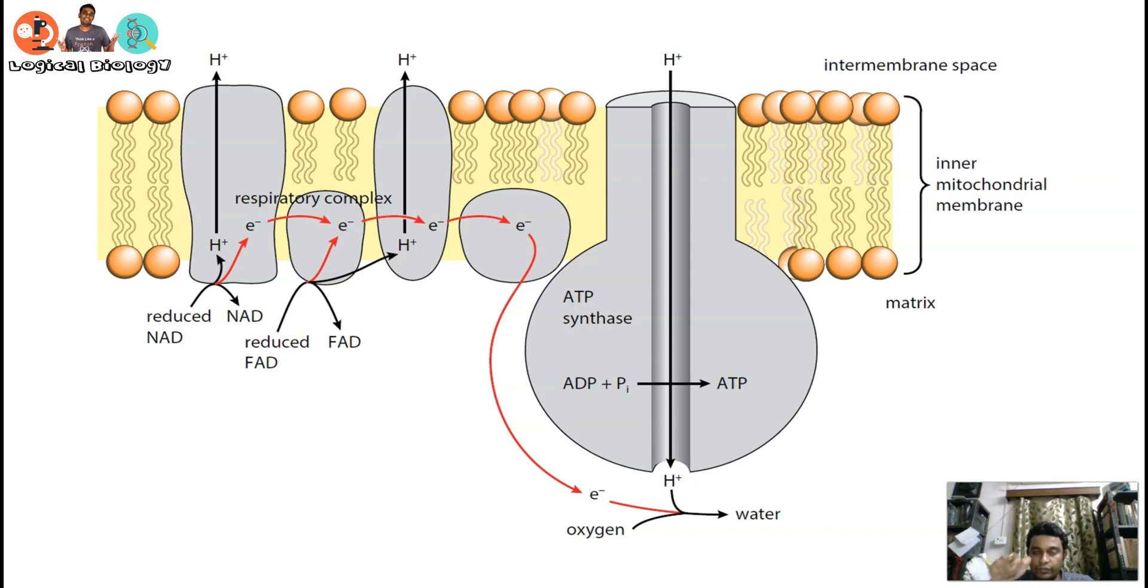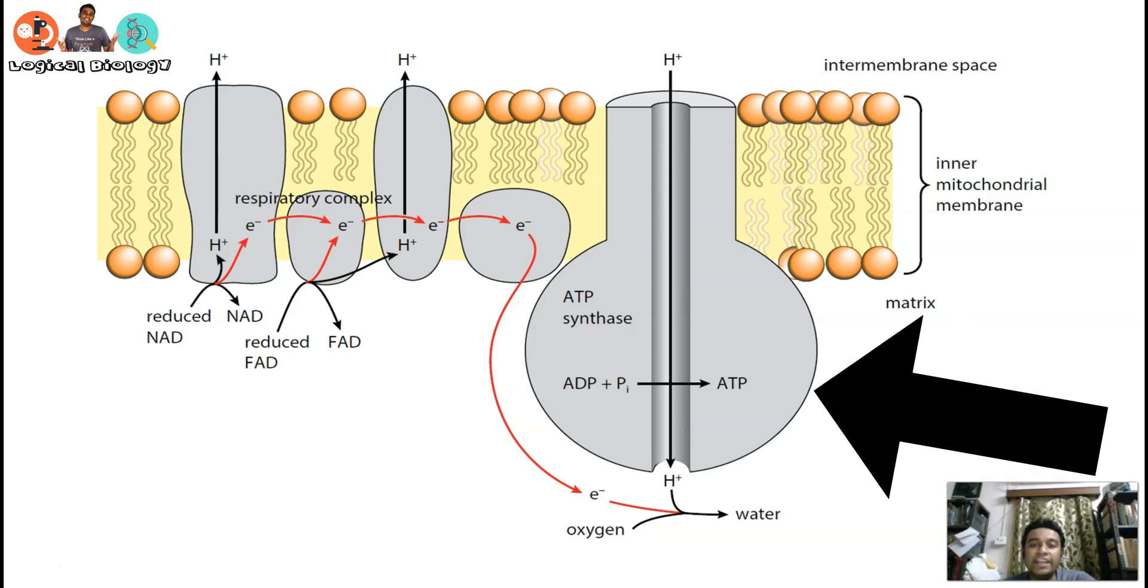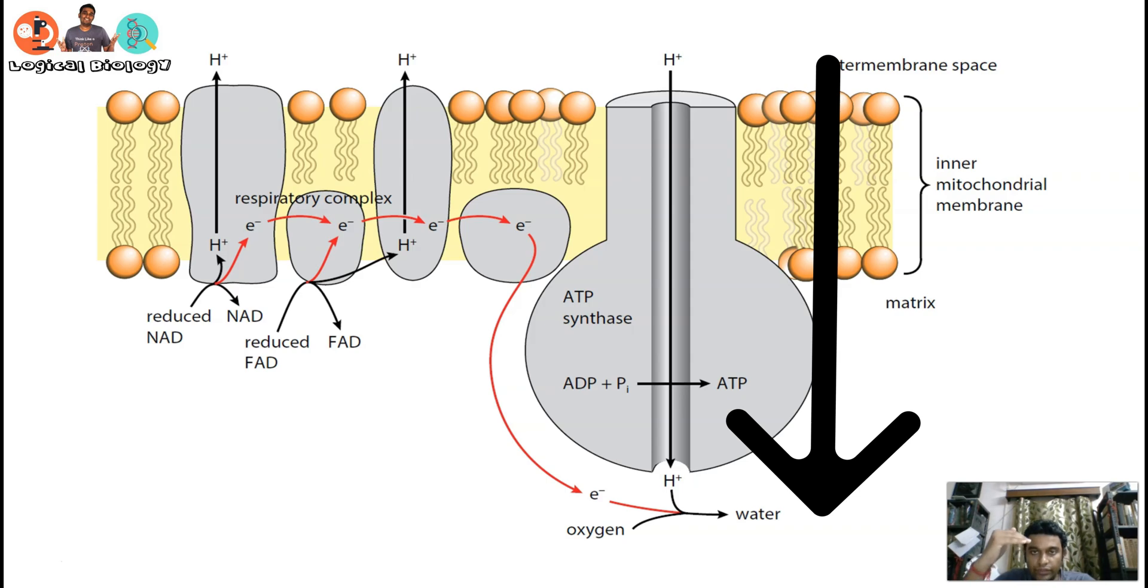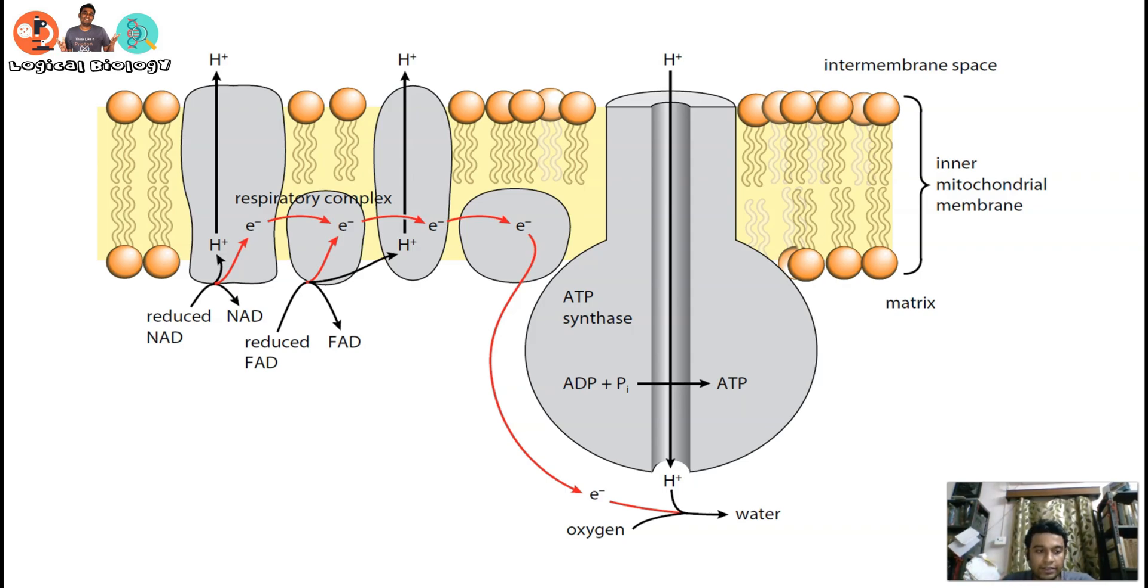Understand, this is nothing but facilitated diffusion because this diffusion is happening with the help of these stalk particles, which is your ATP synthase. As you can see, it is the same enzyme which will ultimately help in the formation of ATP. From the intermembrane space, your protons are diffusing into the matrix because you have developed that gradient.